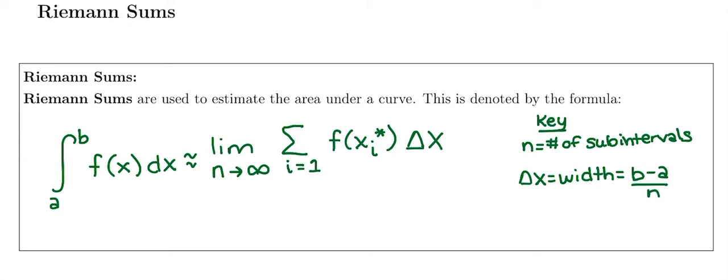So really, to explain this in English and not these math terms, we have our width here. The change in x, or delta x, gives us our width—how wide something is.